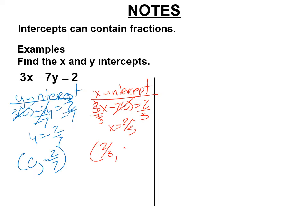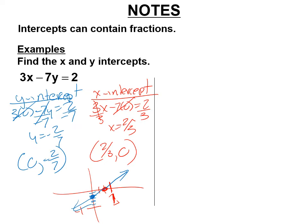Now, that may look horrible to you, but you could graph that. 2 thirds, 0 would be 2 thirds of the way to 1. And for the y-intercept, negative 2 sevenths — that would be 2 sevenths of the way down to negative 1. And the line would look like that. We hardly ever do that because we were trying to make things easy, but these intercepts can contain fractions.